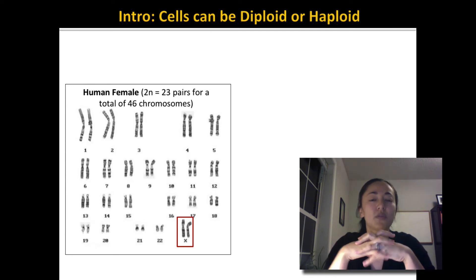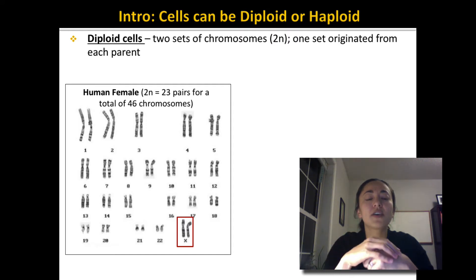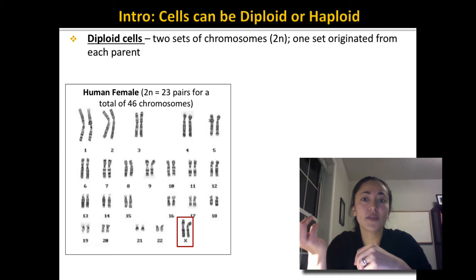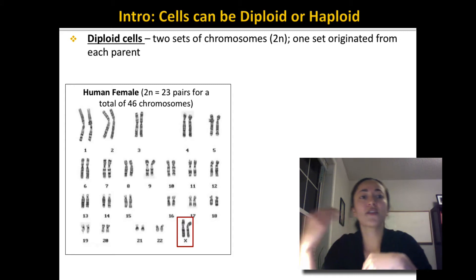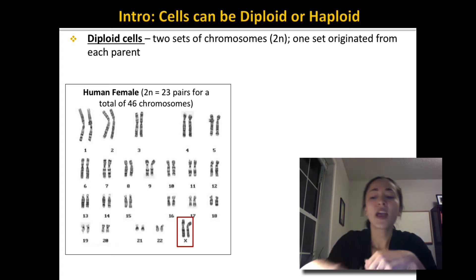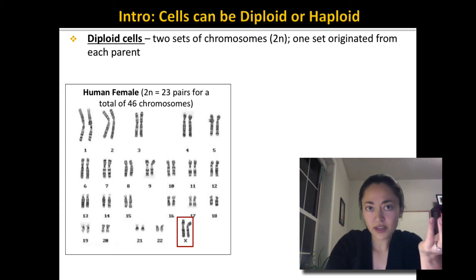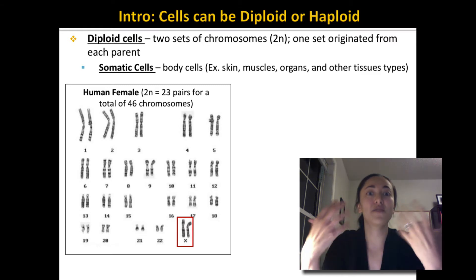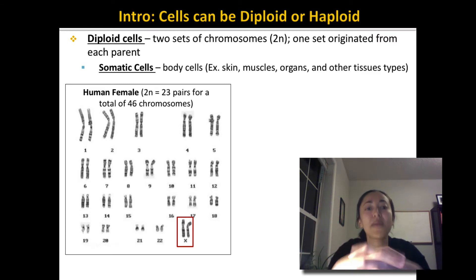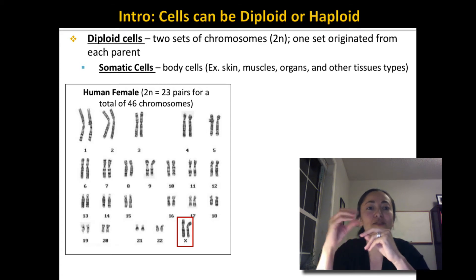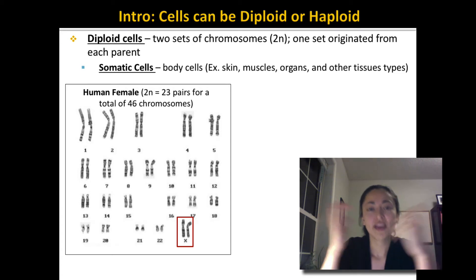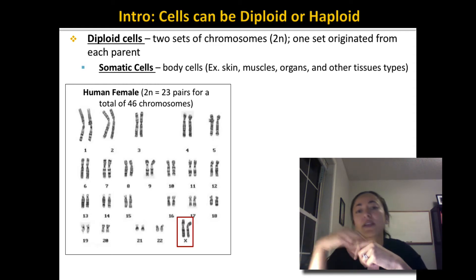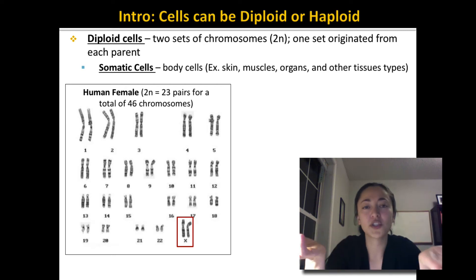Cells can be either diploid or haploid. A diploid cell is a cell that has two sets of chromosomes. One set came from one parent and the other set came from the other parent. The diploid cells in your body are your somatic cells — pretty much every cell in your body. These are cells that make up your body, including skin cells, muscle cells, and cells that make up your organs or any other tissue.